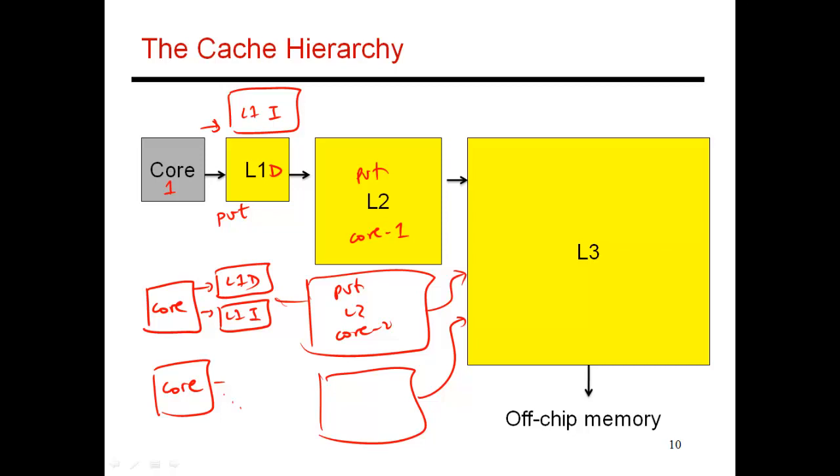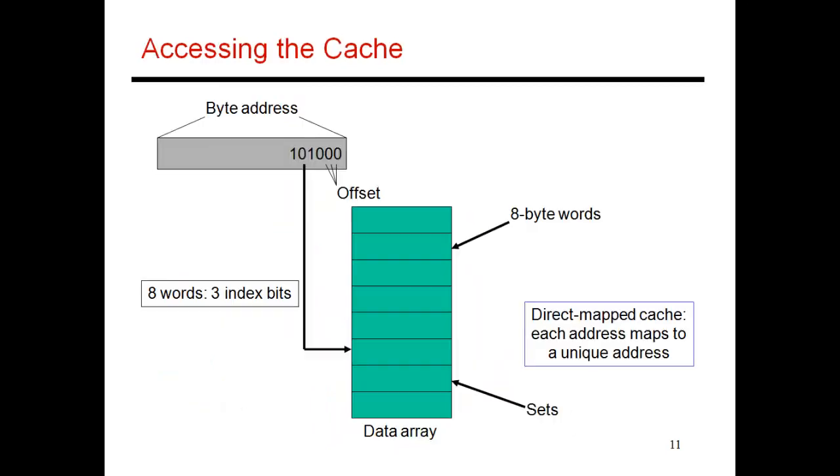So now that we've understood the general hierarchy within a processor, I shall now take an individual cache, and I shall show you how that cache is accessed and how it is organized.